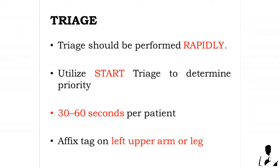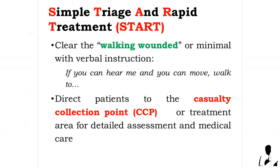Determine priority with no more than 30 to 60 seconds per patient, and attach a ribbon to the upper arm if possible. The next option would be high on the thigh. The goal is to be consistent so they are easily recognized as a priority flag. When you are at the field, first clear the walking wounded, or the minimal ones.